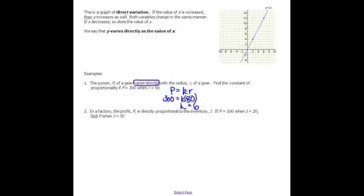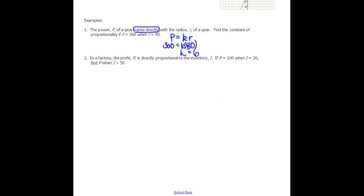In a factory, the profit is directly proportional to the inventory. In this case, we have to do a little bit of substitution. This is like a two-step problem. We solve for k and then we use k to solve our next part of the problem. The profit is directly proportional to the inventory. I know that if p is 100 when i is 20, that would give me k = 5. k is a constant, a constant of proportionality, so this does not change.